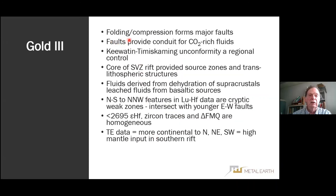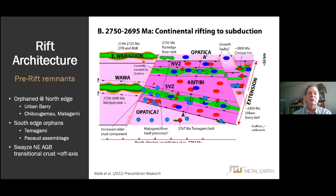At post-2695 Ma, we transition from volcanism to deformation — crustal thickening, strain localization along major structures — therefore metamorphic fluids and a contribution from mantle source to alkaline magmas. During orogeny we form major faults; the faults are a conduit for CO2-rich mineralizing fluids. There is the influence of the Temiskaming and Keewatin unconformity as a regional-scale control. Fluids are derived from dehydration of basalts, dehydration of supercrustal rocks, and leached fluids from basaltic sources.